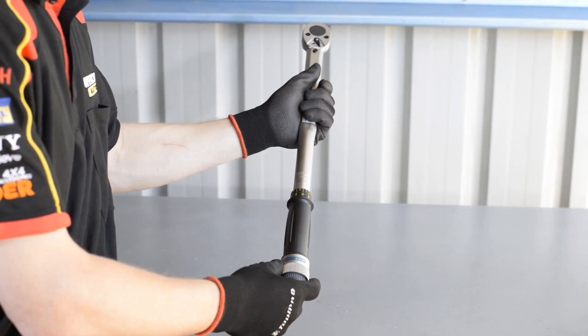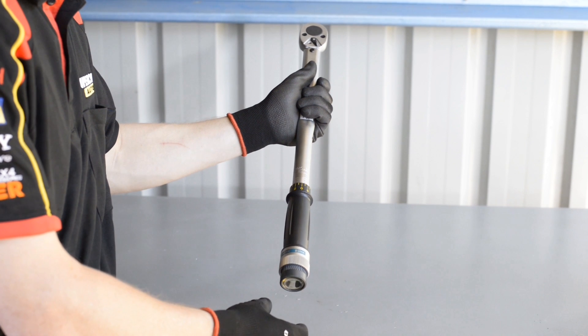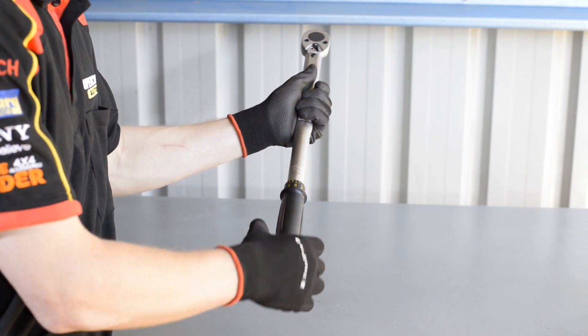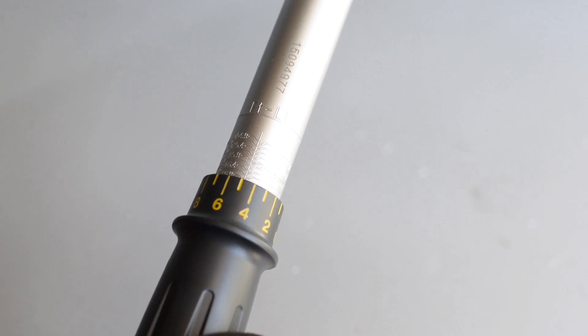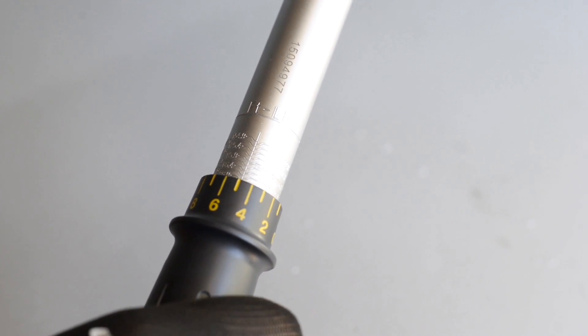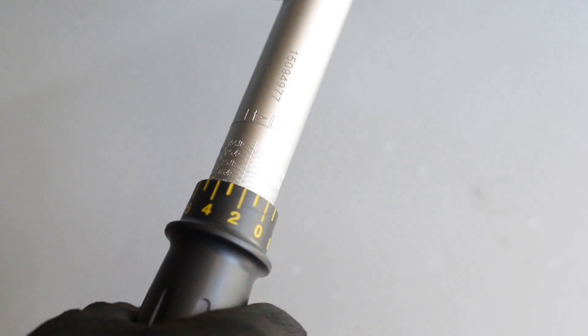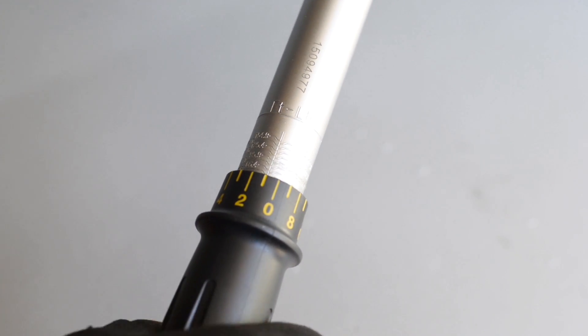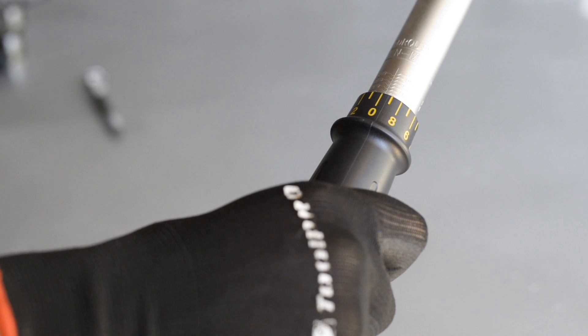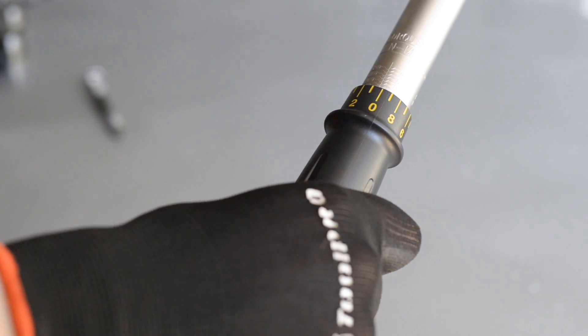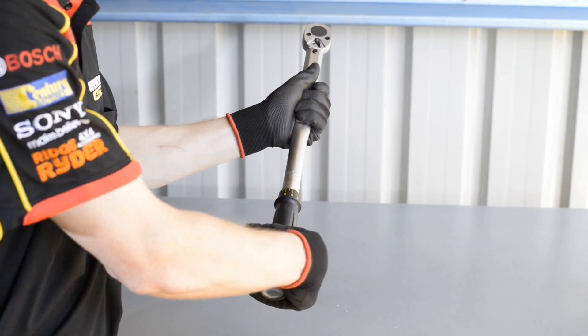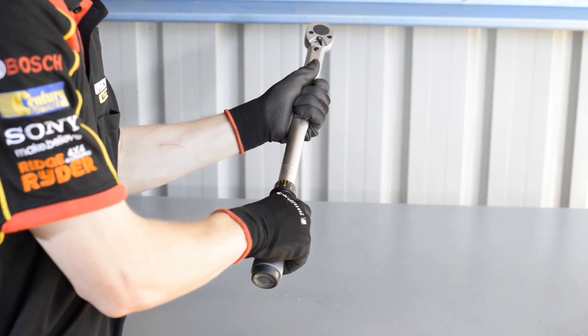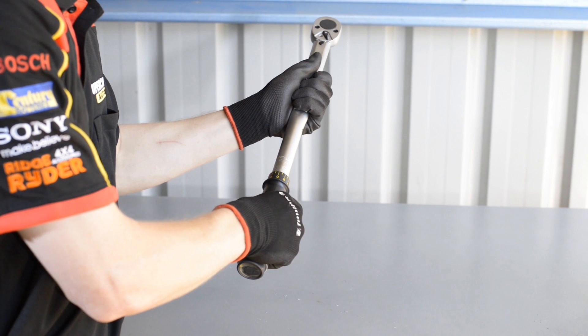To set the desired torque, first unlock the adjuster by sliding it towards the back of the tool. The markings on the wrench are in 10 Nm increments. To get a value down to the single unit, twist the handle to the closest marking, line up the zero with the center line, and then turn the adjuster to the single digit you require. If you're working in foot-pounds, turn the torque wrench over and use the foot-pound scale.